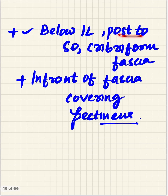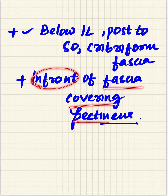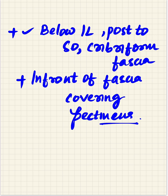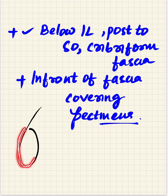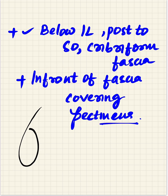The femoral canal is present in front of the fascia covering the pectineus. Recalling the saphenous opening: the inferolateral border is present in front of the femoral sheath, and the medial border is present behind the femoral sheath. That part of the femoral sheath contains the femoral ring, which is why it is described as posterior to the saphenous opening and cribriform fascia, and in front of the fascia covering the pectineus.